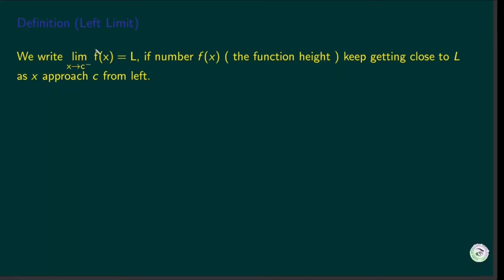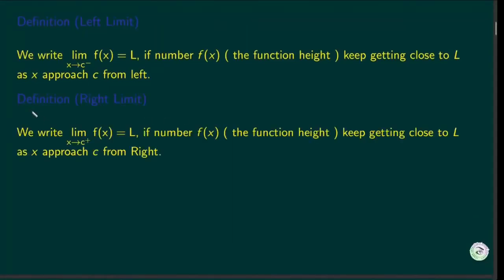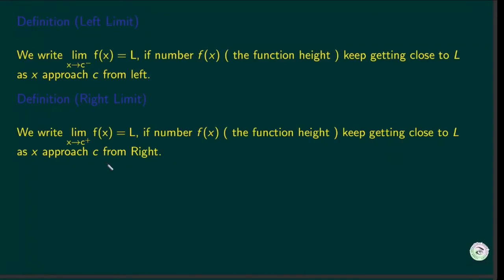The definition of the left limit: we write the limit of x going to c from the left of f equals l, and say that the left limit of f is l if the function value keeps getting close to l as x approaches c from the left. The definition of the right limit: we write the limit of x going to c from the right of f equals l, and say that the right limit of f is l if the function value keeps getting closer to l as x approaches c from the right. These left and right limits are called one-sided limits.